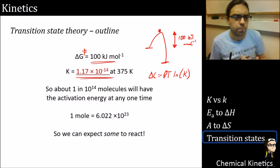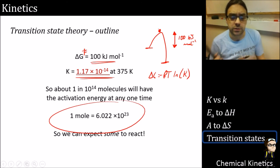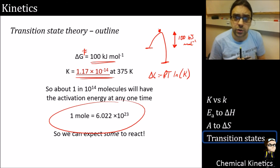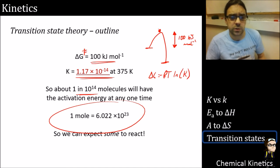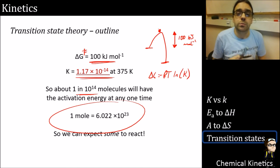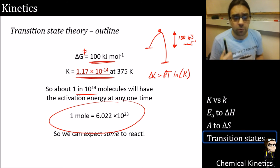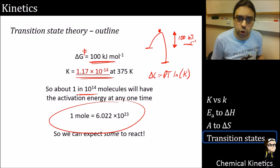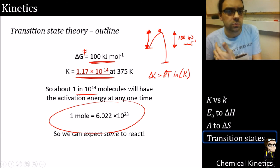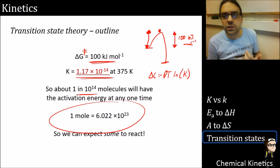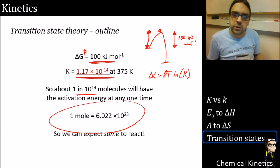That sounds really low, but a mole of material is on the scale of 10²³. So actually quite an appreciable number - if 1 in 10¹⁴ molecules will react, at any one point in time something with an activation energy of 100 kJ/mol has quite a number capable of reacting. That's roughly how transition state theory begins to work - we figure out how many molecules can reach the transition state and what the equilibrium constant is, then convert that into rate data.